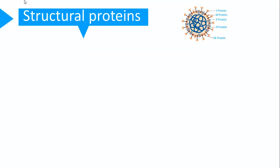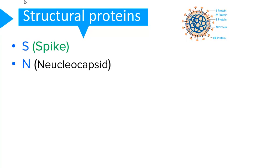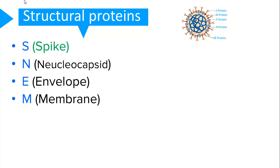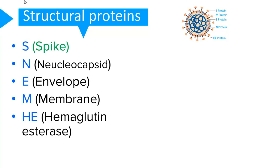These structural proteins are: the S protein known as the spike protein, the N protein or the nucleocapsid protein, the E protein which is the envelope protein, the M protein or the membrane protein, and the HE protein known as the hemagglutinin-esterase protein.